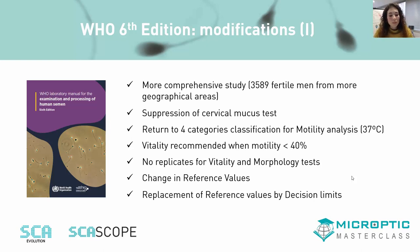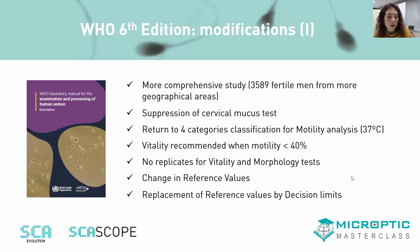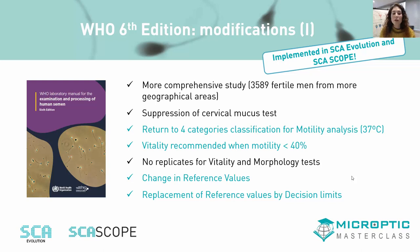Very important and interesting: there has been a change in reference values. The 5th percentile was normally taken as the cutoff for each analysis, and now the reference values have been replaced by decision limits. It has been stated that the use of 5th percentile values is not sufficient to diagnose male infertility. The items highlighted in blue on this slide are the ones we have implemented in both our SCA Evolution and SCA Scope systems.